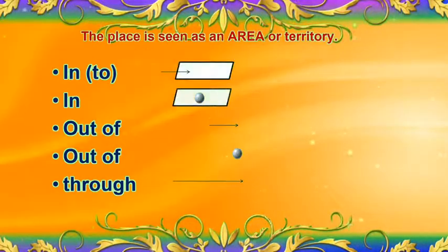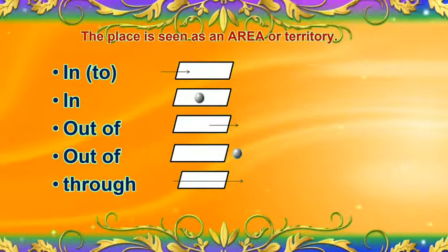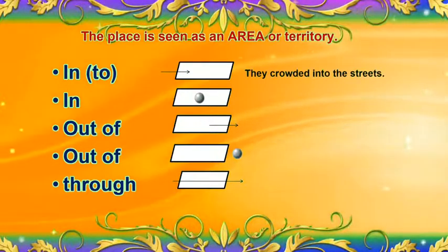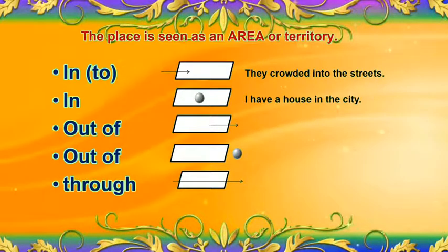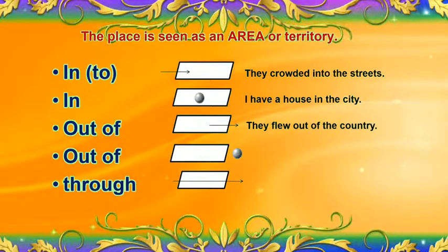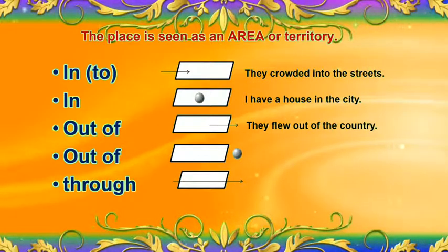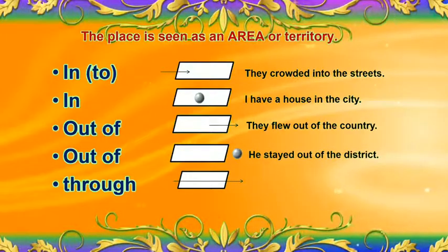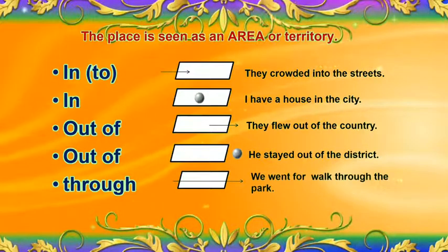Now let us see the use of prepositions when the place is seen as an area or territory. 'Into': they crowded into the streets. 'In': I have a house in the city — here, the place 'city' is seen as an area. 'Out of': they flew out of the country; stayed out of the district. We went for a walk through the park.